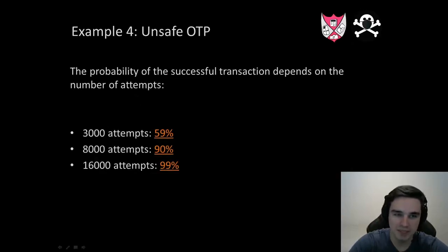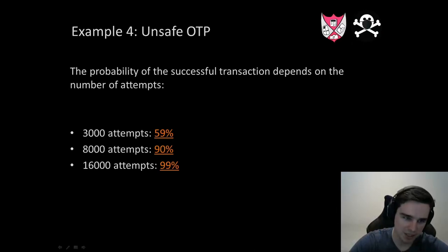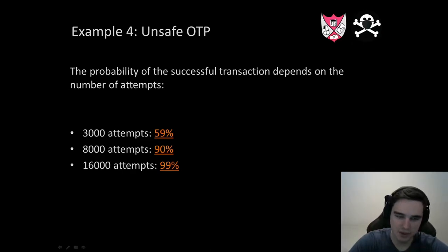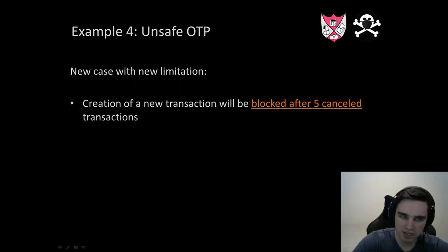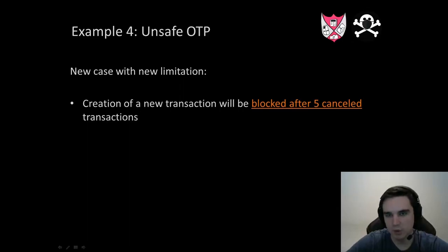The probability of a successful transaction depends on the number of attempts. After 3,000 attempts, there is about a 60% probability. If we can try 16,000 attempts, it will be 99%. That is a really good result. Now a more complex example with new limitations: after five canceled transactions, we are blocked for 24 hours and can't create new ones.